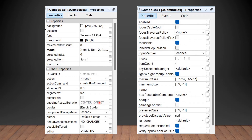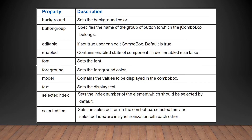Let us discuss the properties of JComboBox. The background property sets the background color. The buttonGroup property specifies the name of the group of buttons to which the JComboBox belongs. The editable property, if set to true, allows the user to edit the combo box; the default is true.